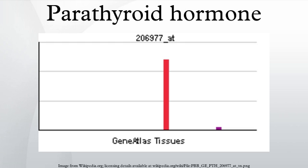Inhibitors: increased serum Ca2+, severe decreases in serum Mg2+, which also produces symptoms of hypoparathyroidism, and calcitriol. Clinical significance — hyperparathyroidism: the presence of excessive amounts of parathyroid hormone in the blood occurs in two very distinct sets of circumstances. Primary hyperparathyroidism is due to autonomous, abnormal hypersecretion of PTH from the parathyroid gland, while secondary hyperparathyroidism is an appropriately high PTH level seen as a physiological response to hypocalcemia.